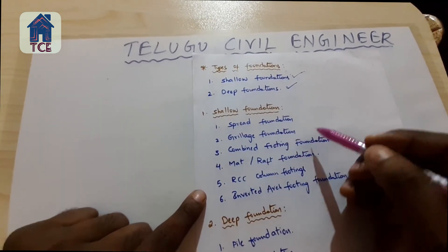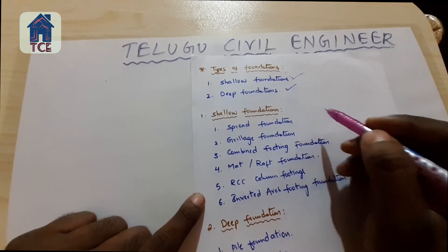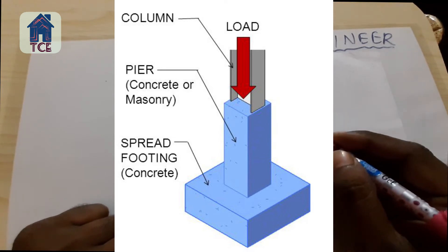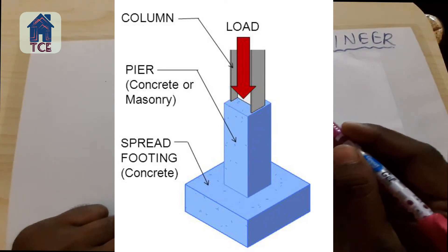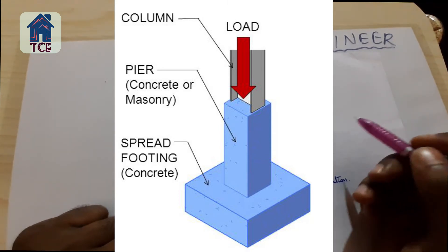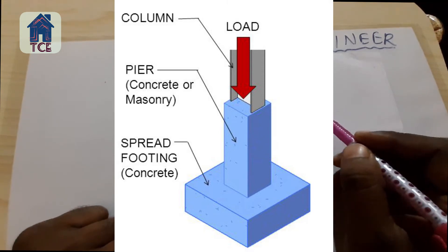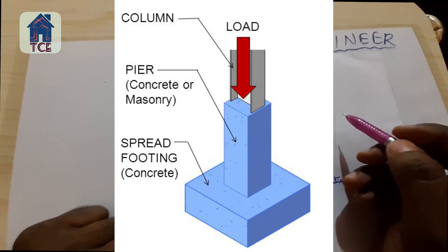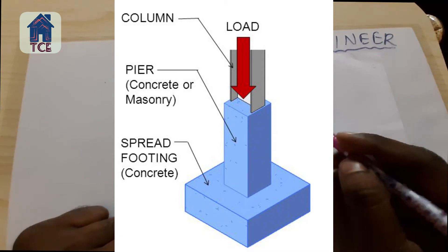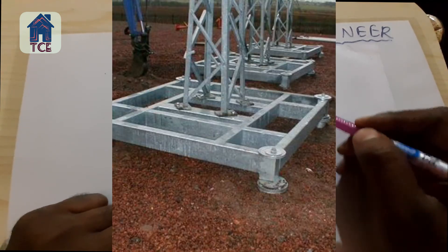Under shallow foundation, the first type is spread foundation. The next one is grillage foundation.